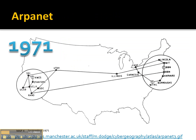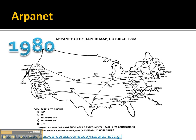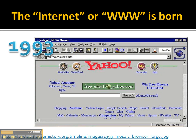We also had another technology coming out called the Internet. It started in 1971 with ARPANET. ARPANET was a series of computers linked together at different universities and research centers. In 1971 it was pretty small, and by 1980 it had gotten a little bit larger. Then everybody saw the potential and said, why don't we open this up to the general public?